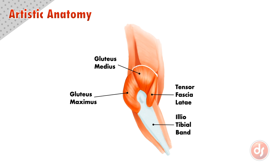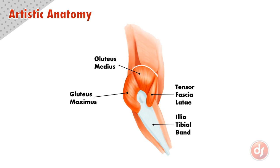But if we looked at a medical anatomy textbook, it would look more like this, with the iliotibial band having a much more complex set of attachments and making the form appear more confusing. The artistic anatomy version is also correct, but describes the forms more clearly.